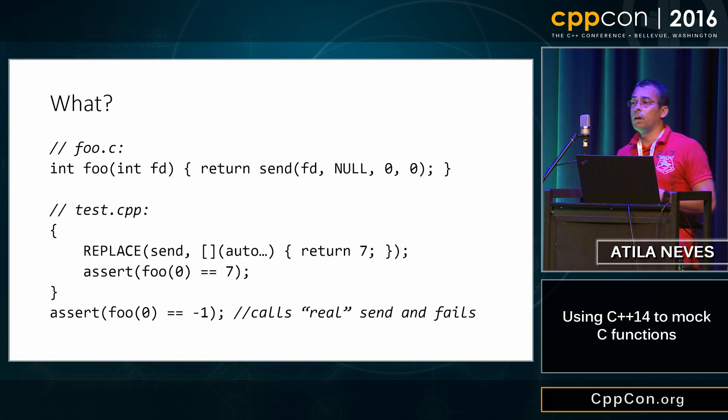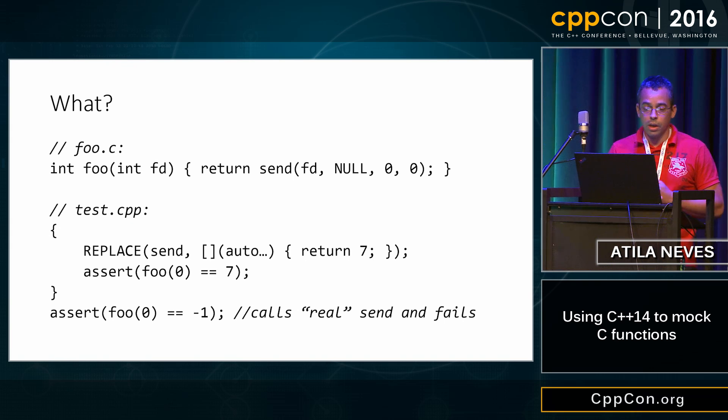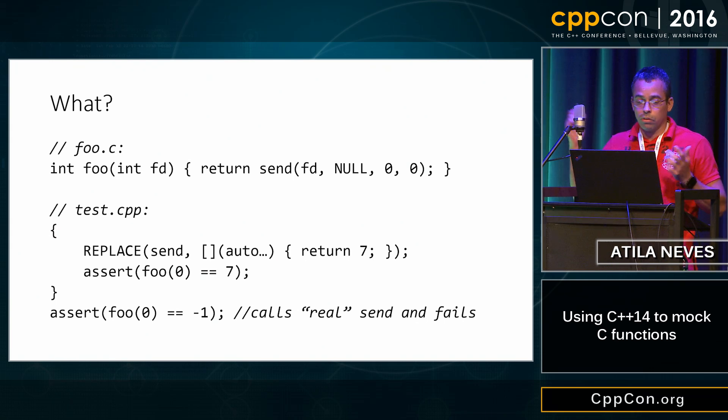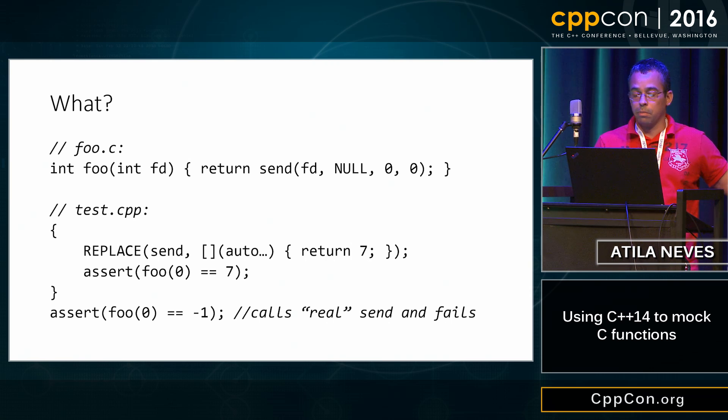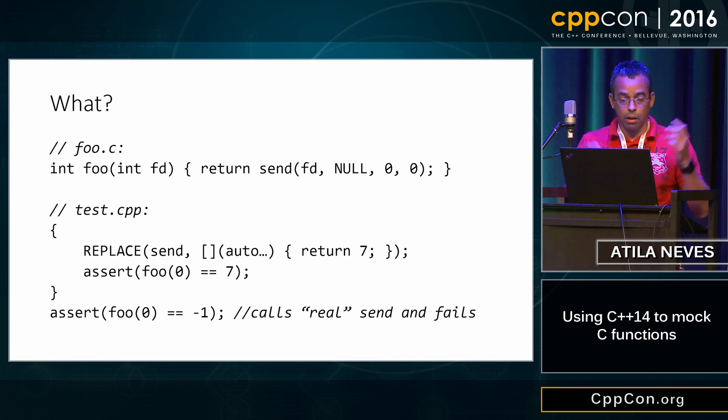Right, so what is it? Imagine you have a production function called foo in a file called foo.c. Now this function is calling send and you don't want to do that because side effects when you're testing are bad because you want determinism and all that good stuff. So contrived example but lightning talk, it just calls send, returns the same thing send does, passes the file descriptor, doesn't actually really do anything because it's null, et cetera.